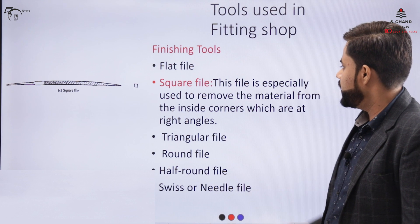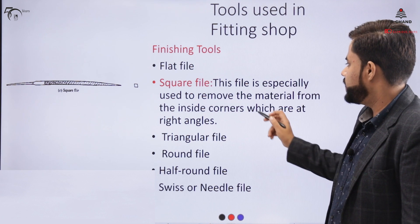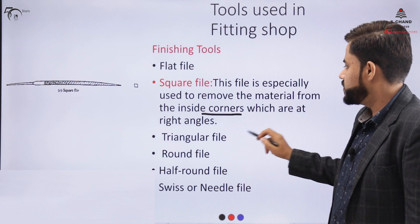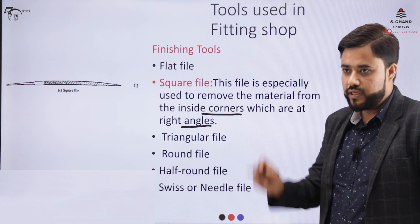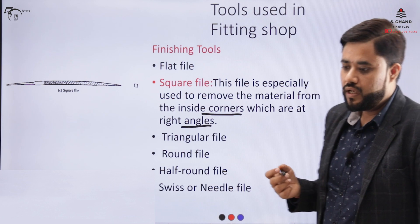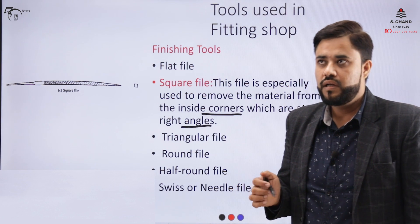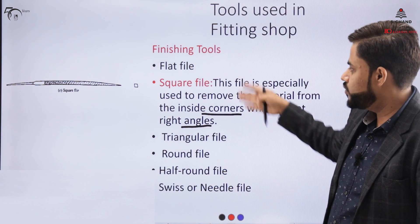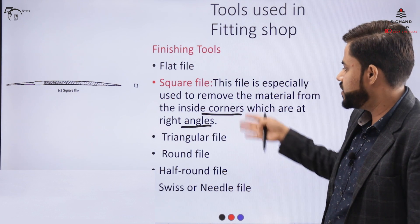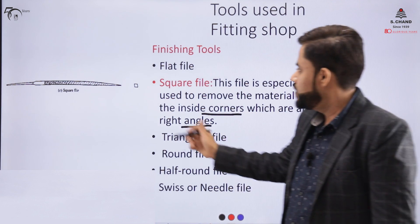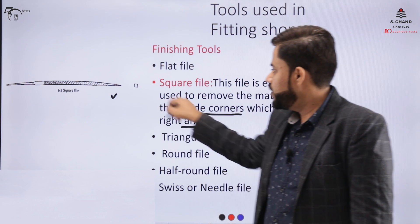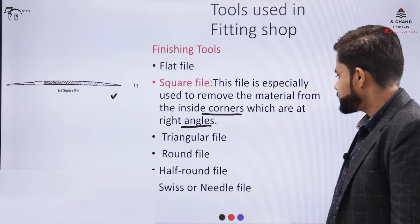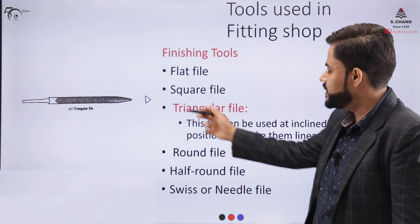The square file is used to remove material from inside corners that are at right angles. You will come across certain components joined together at right angles, and in order to remove material from those edges, we use a square file to finish the component.